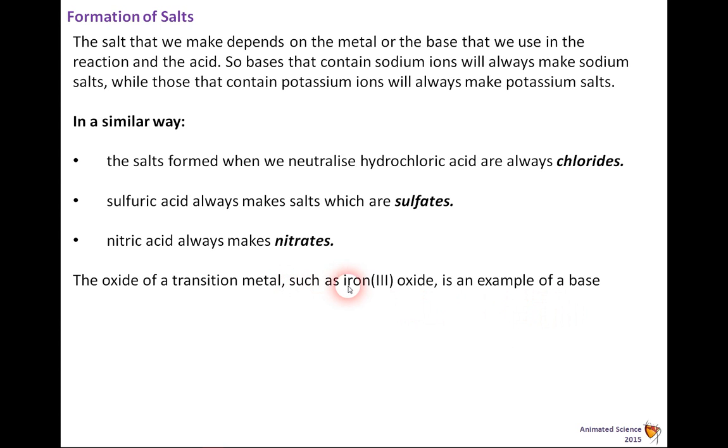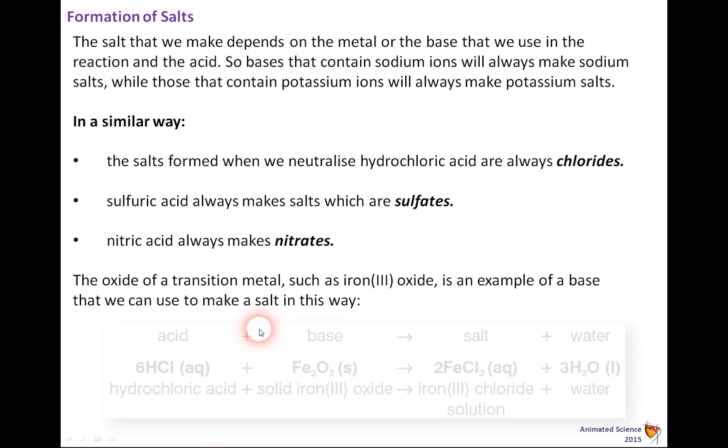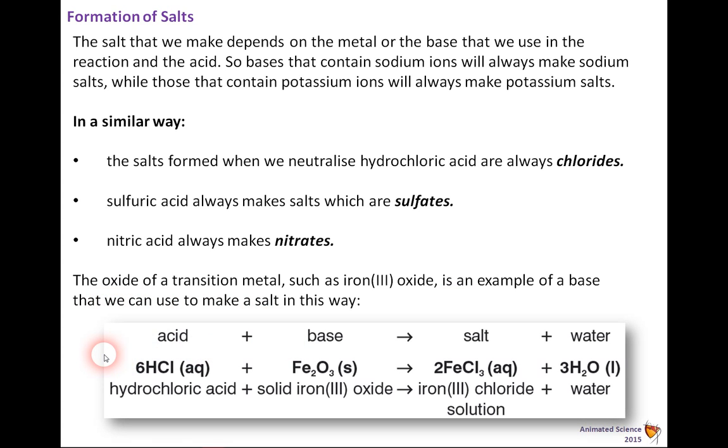The oxide of a transition metal, such as iron 3 oxide, is an example of a base that we can use to make a salt in this way. Let's look at this one. This looks really complex. Acid plus base makes salt and water. AB makes SW.